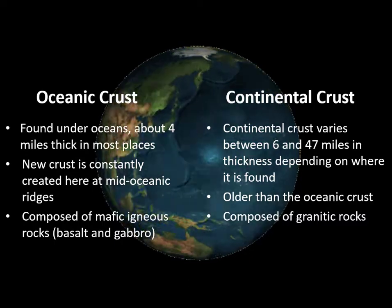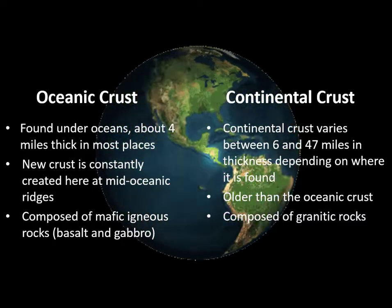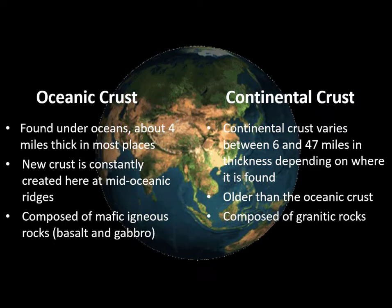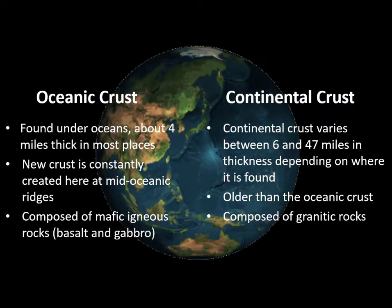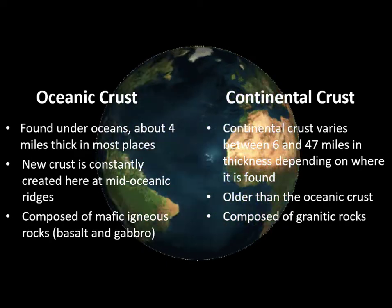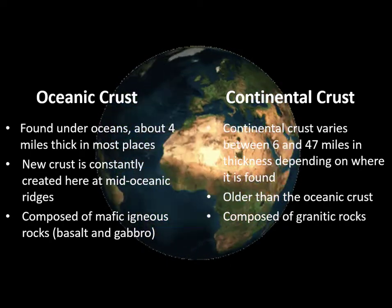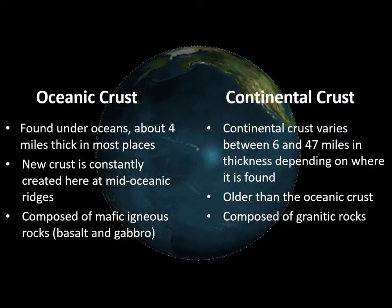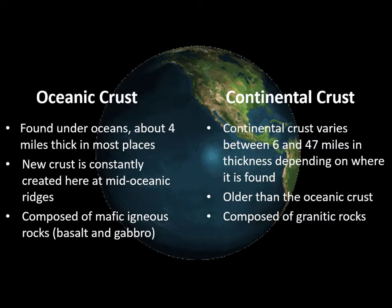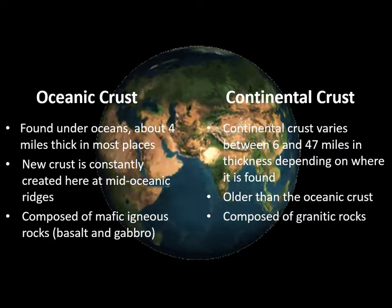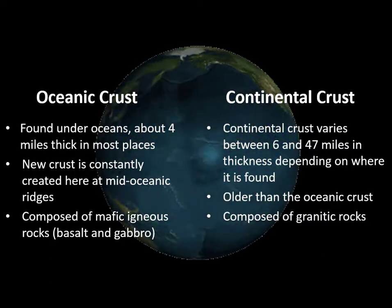A feature unique to oceanic crust is that there are areas known as mid-ocean ridges where oceanic crust is still being created. Magma shoots up through gaps in the ocean's floor; as it cools, it hardens into new rock which forms brand new segments of oceanic crust. Continental crust tends to be much older than the oceanic kind, and rocks found in this kind of crust are often the oldest in the world.